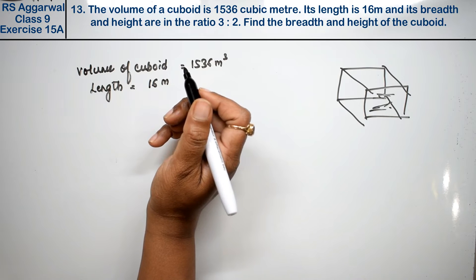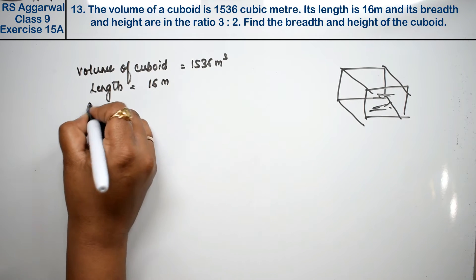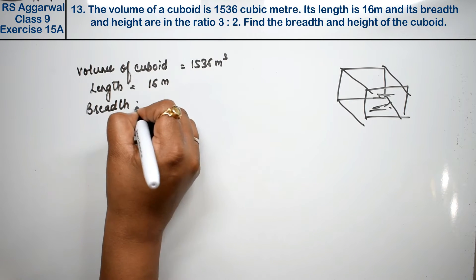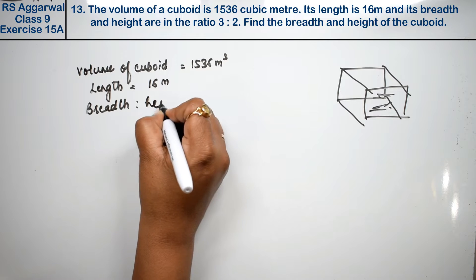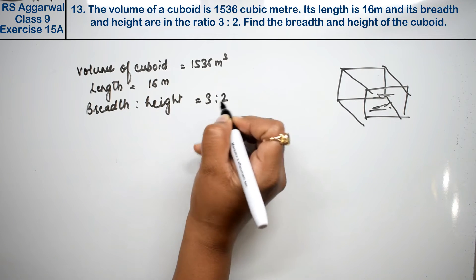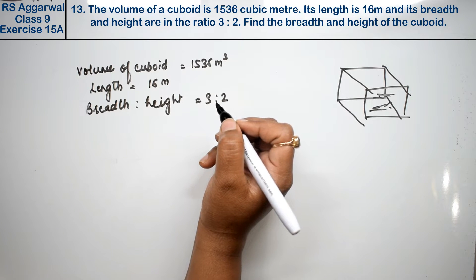And its breadth and height are in ratio 3 to 2. Breadth is to height equals 3 is to 2 ratio. Find the breadth and height of the cuboid.